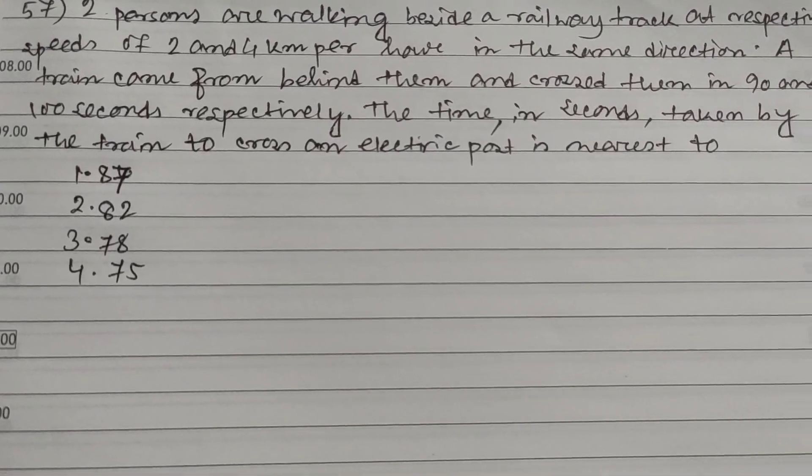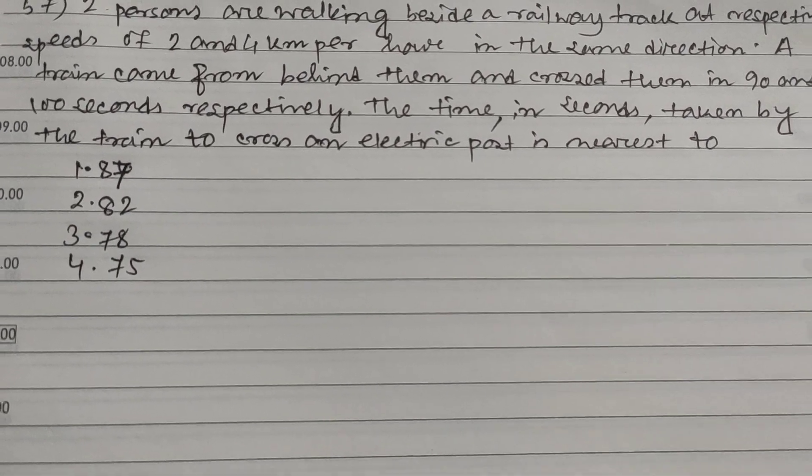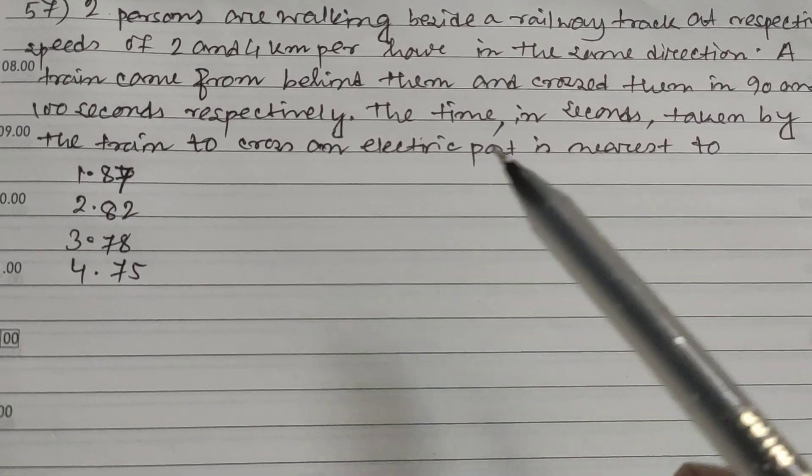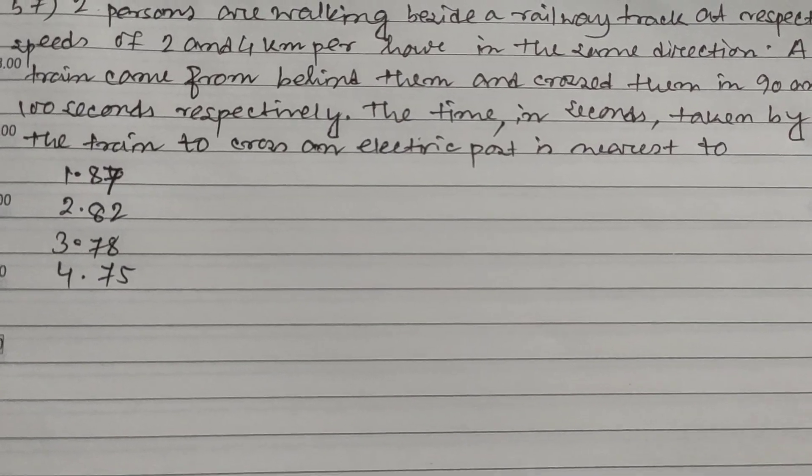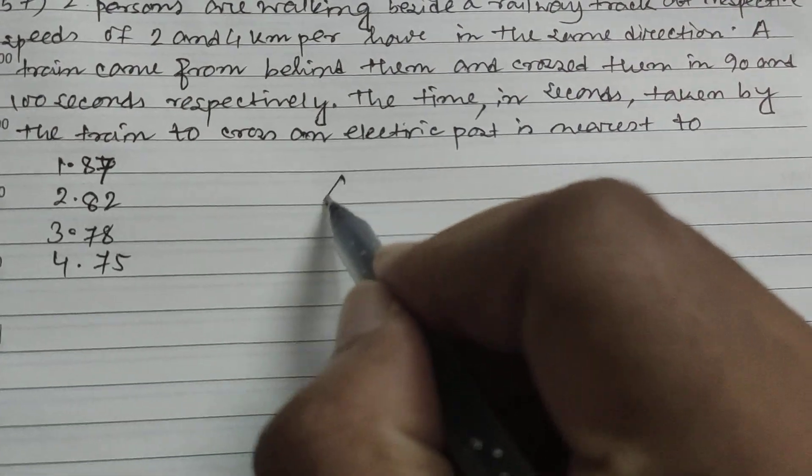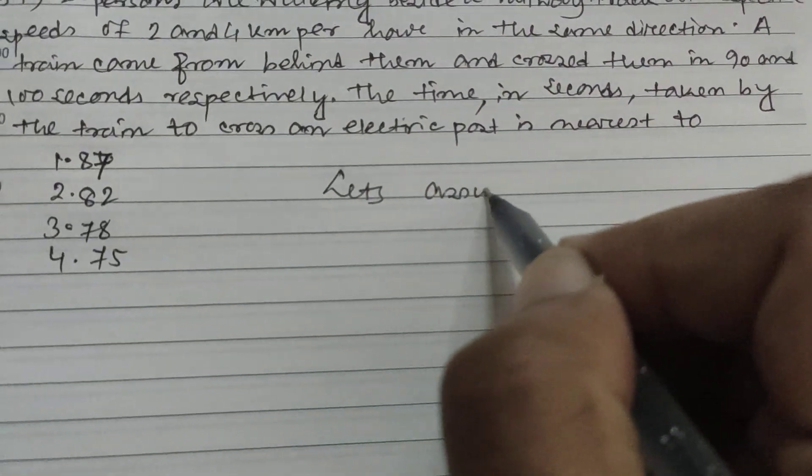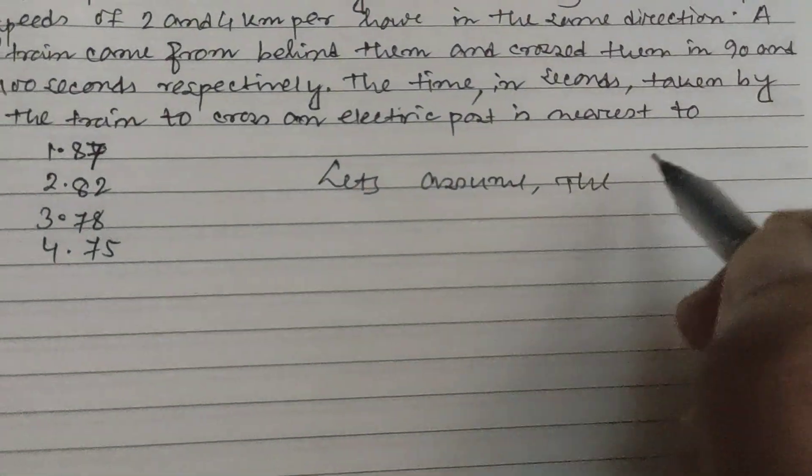If a train will cross the electric post, this is the same as crossing a person. Let's assume the train speed is s.